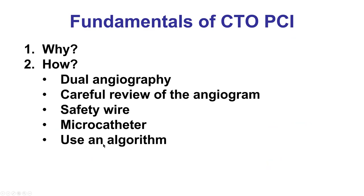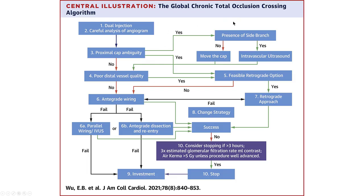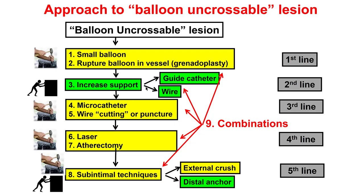Using an algorithmic approach helps. There is now a global CTO-crossing algorithm, reviewed in video 8.4, that breaks down the crossing into 10 different steps and provides a helpful blueprint. This is not a rigid protocol — there is always a need to adapt the algorithm to local case demands — but it provides a useful way to think about how to cross CTO-PCI. There are also sub-algorithms within the main algorithm, such as the balloon-and-cross algorithm, which will be discussed in a separate video.